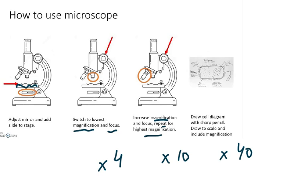×4 means 4 times magnified, ×10 means 10 times, and ×40 means 40 times. That is what you use with the light microscope. Then you draw the diagram with a sharp pencil and draw to scale.